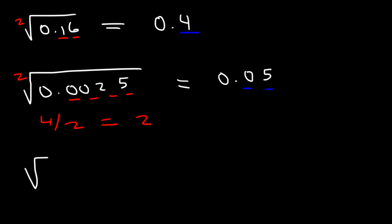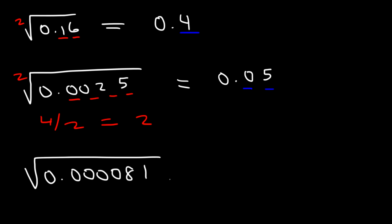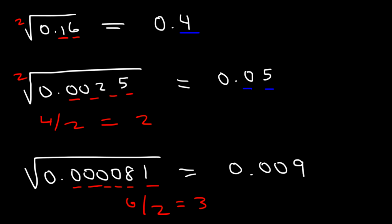And now what about this one? The square root of 0.00081. Notice that we have six digits to the right of the decimal point. Six divided by 2 is 3, so the final answer should have three digits to the right of the decimal point. The square root of 81 is 9, so this is going to be 0.009.